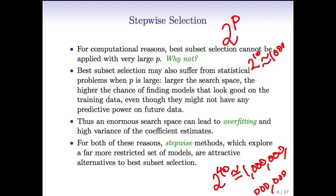So for these two reasons — computational and statistical — best subset selection isn't really great unless P is extremely small. In this setting, we can use stepwise methods, which are the same idea as best subset selection but look at a more restricted set of models. Instead of looking at 2 to the P models, they look at more like P squared models.